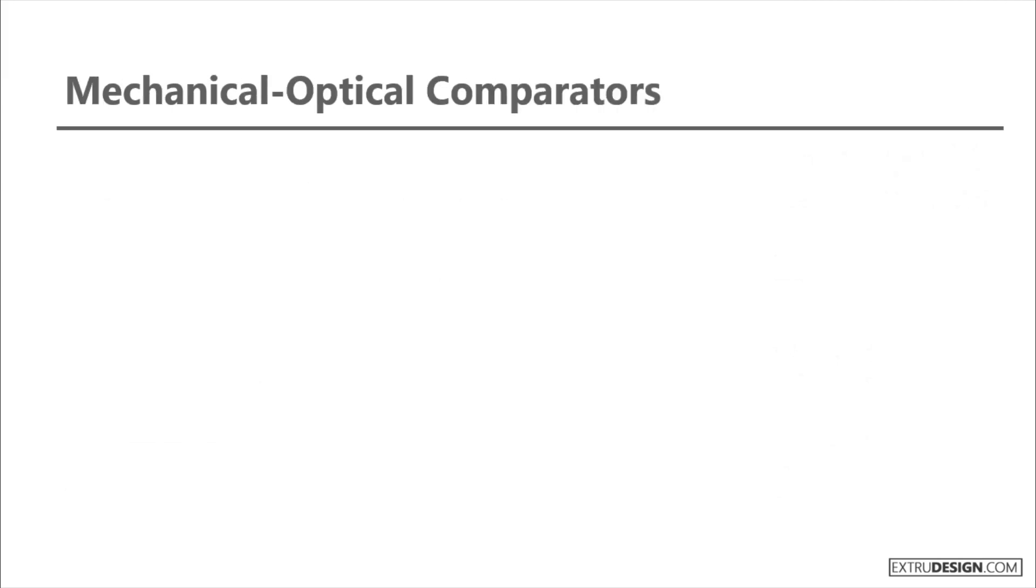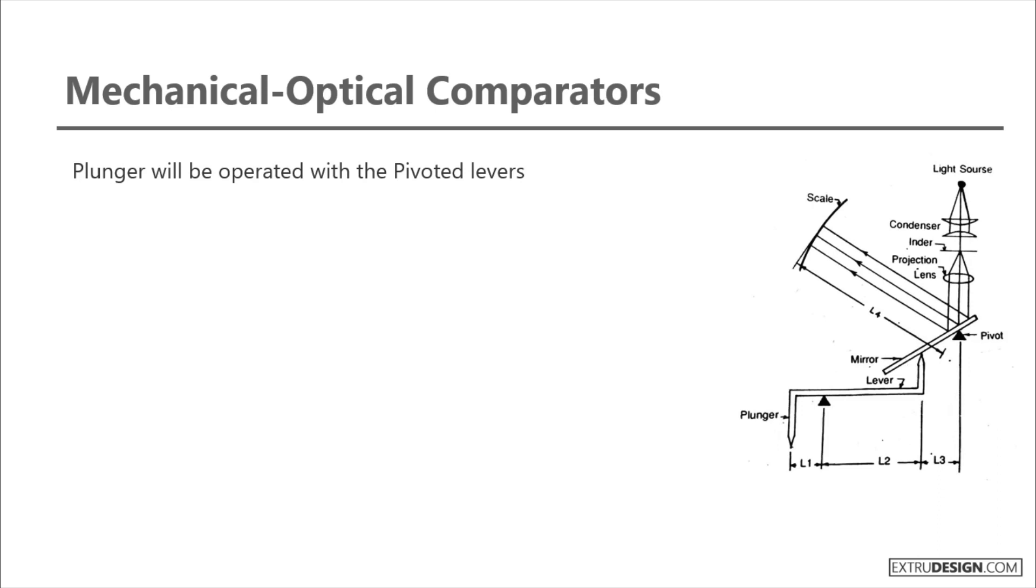Now let's discuss the mechanical optical comparators. The mechanical optical comparators are the same as the optical comparators, but the plunger in mechanical optical comparator will be replaced with the pivoted levers.